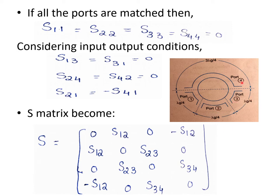Considering our rat race junction with 4 ports, we first assume all 4 ports are matched to the junctions so there is no mismatch or reflection. Therefore the diagonal elements in the S-matrix — S11, S22, S33, S44 — are equal to zero, meaning all ports are matched and diagonal elements turn to zero.